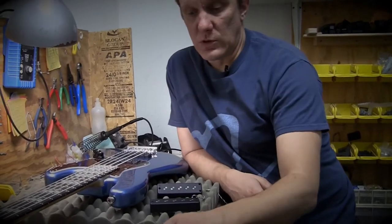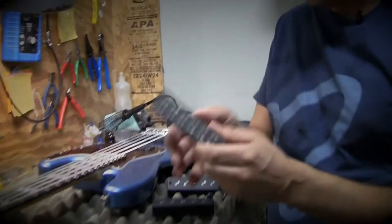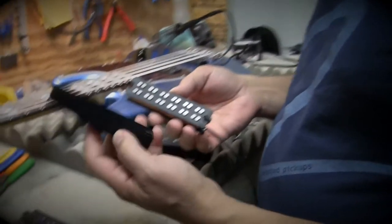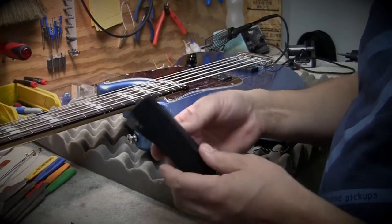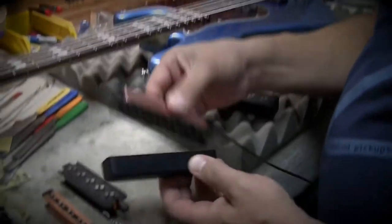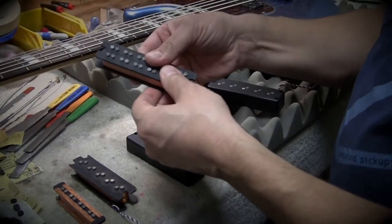When we started making pickups, we were doing J pickups and P pickups and dual coils. We had gotten these covers in from a supplier and obviously we were going to put dual coils in there because we could fit them in there like two J pickups basically.